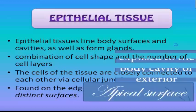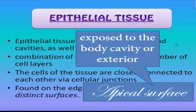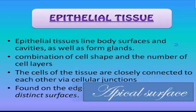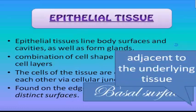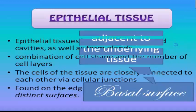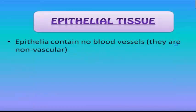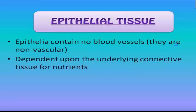We have two distinct surfaces for epithelial. The first is the apical surface, which is exposed to the body cavity or exterior. The second is the basal surface, which is adjacent to the underlying tissues. Epithelial contains no blood vessels and is non-vascular, depending upon the underlying connective tissue for nutrients.